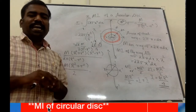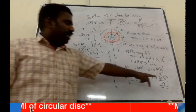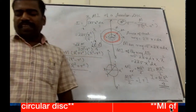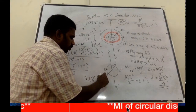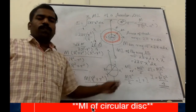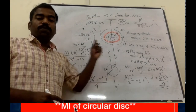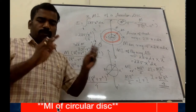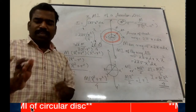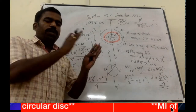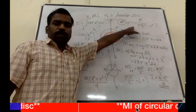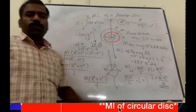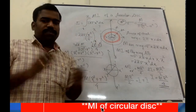For the diameter axis, applying the perpendicular axis theorem, the moment of inertia is M times (capital R squared plus small r squared) divided by 4. This is the moment of inertia of the annular disc about the diameter. Thank you!